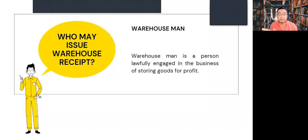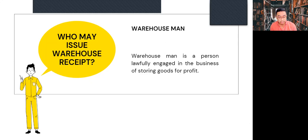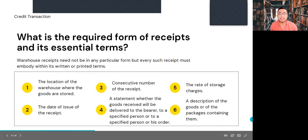That is what warehouse receipts are, and I hope that the video gives you an idea. Now let us answer the first question: who may issue warehouse receipts? The person who may issue warehouse receipts is the warehouse man, defined as a person lawfully engaged in the business of storing goods for profit. Under Section 1 of the Warehouse Receipts Act, only the warehouse man may issue warehouse receipts. A receipt not issued by a warehouse man is not a warehouse receipt, even if it is in the form of one. A duly authorized officer or agent of a warehouse man may also validly issue a warehouse receipt.